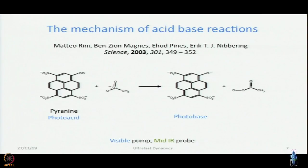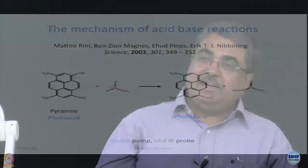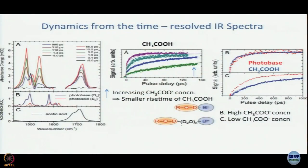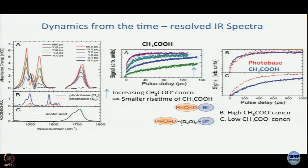This is the reaction, and how do you follow it? By using pump-probe spectroscopy — but here the pump is visible, around 400 nm, because that is where pyranine absorbs. The probe is IR, not visible. The good thing about using IR is there is a lot of data. Just look at wherever the arrow points. This here is the IR spectrum of acetic acid — a little different from what we are used to seeing because the y-axis is absorbance and not transmittance. So this is your acetic acid absorption in IR, and of course deuterated acetic acid will come, and these are the absorptions of the photo base and photo acid.